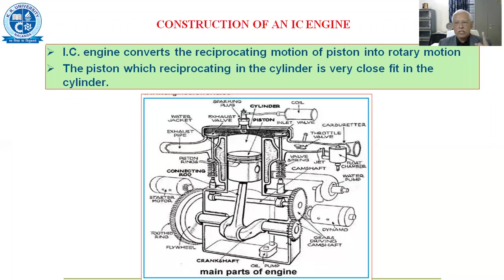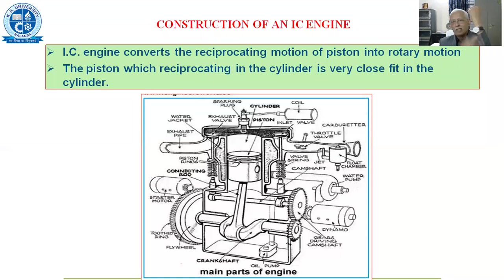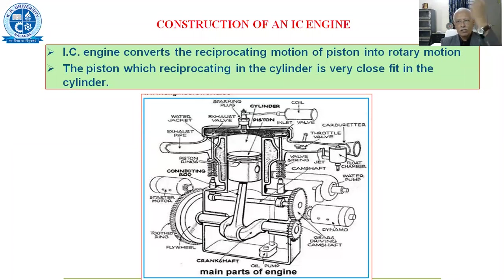The IC engine — the combustion engine — converts reciprocating motion into rotary motion, with the help of some components. The piston moves up and down, and the piston is connected to the connecting rod. This we call the small end, and the other side is the bigger end. So it moves like this — reciprocating motion is converted into rotary motion.